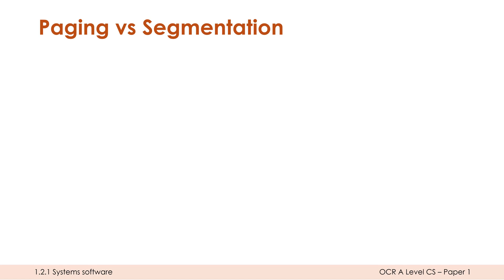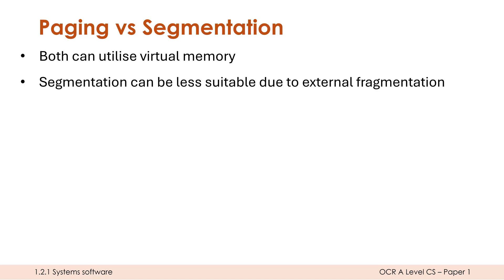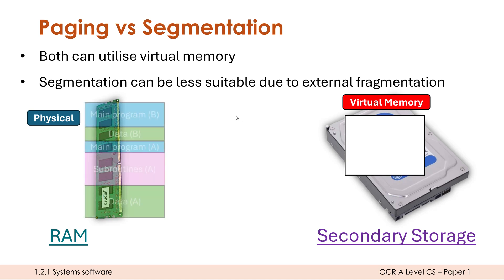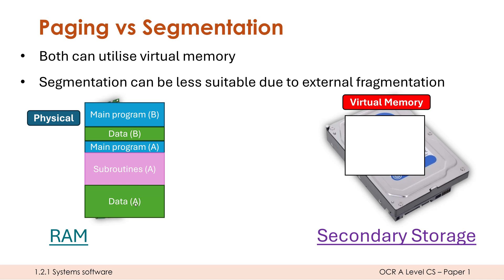Just to end by talking about segmentation: paging is used most often for virtual memory, but both can use it. I don't want you to think segmentation can't utilize virtual memory because it can — it's just a bit less suitable, mostly because of external fragmentation, which is the main weakness of segmentation. It's a lot more prevalent when we have virtual memory and causes more issues when we are swapping things in and out. Let's use a simpler example: let's say RAM is completely full with segments for program B and program A, and we've already had to move something into virtual memory.